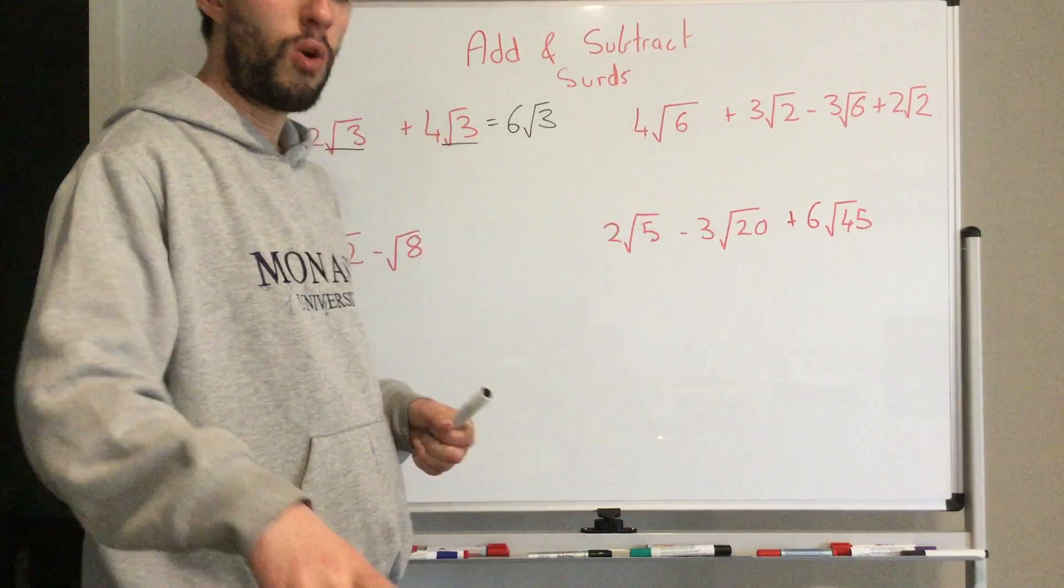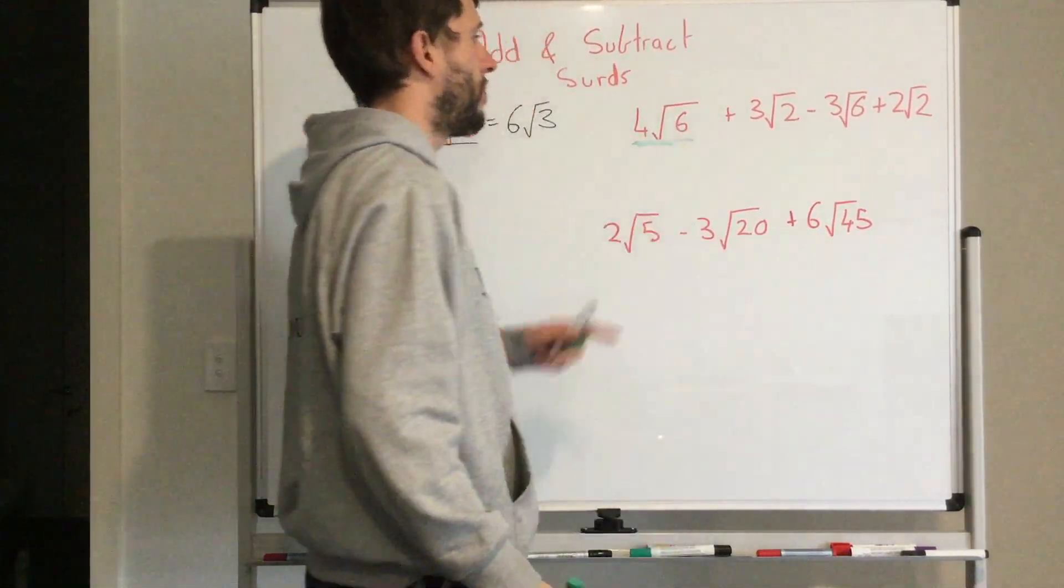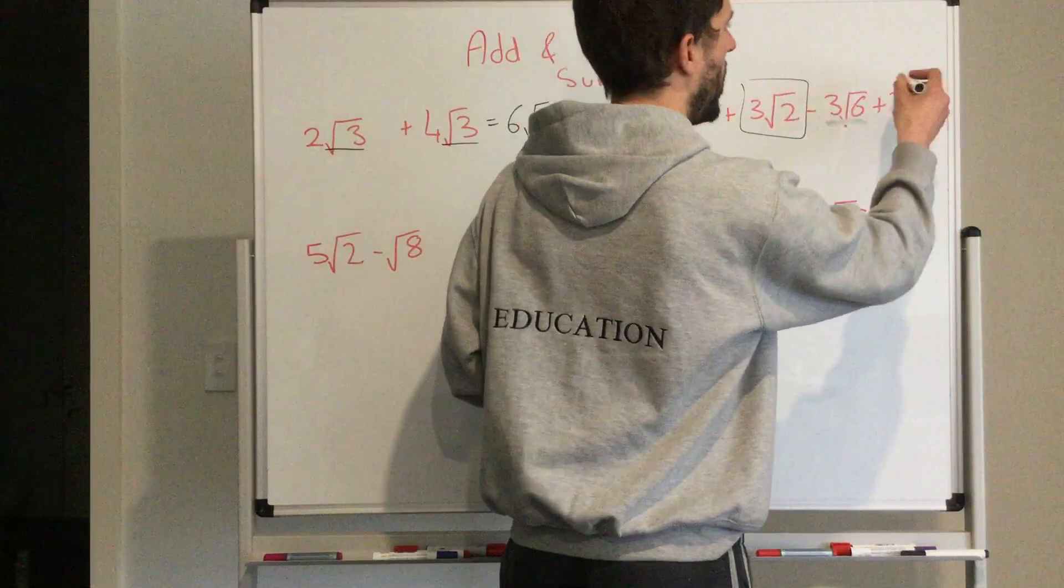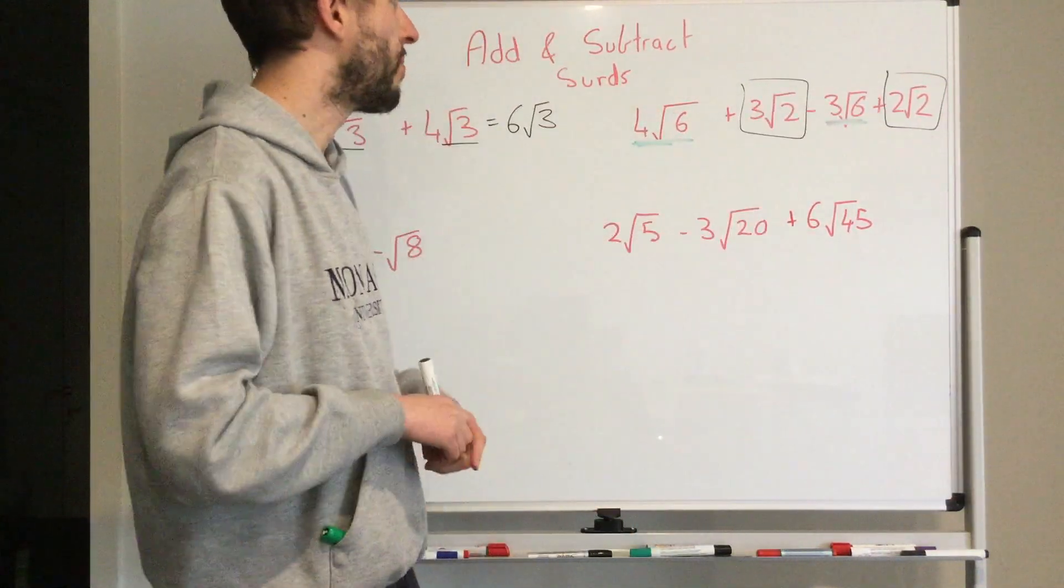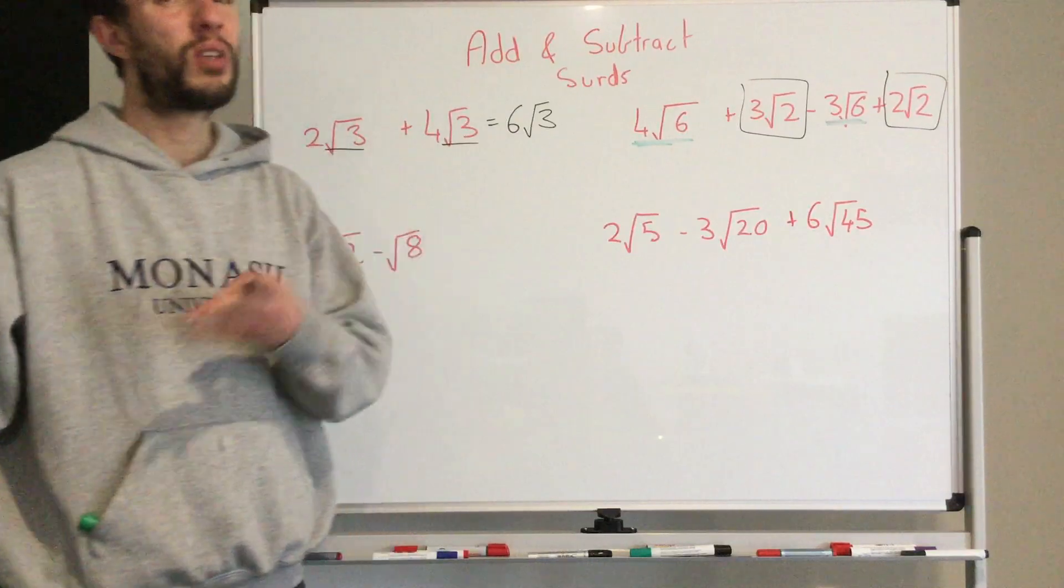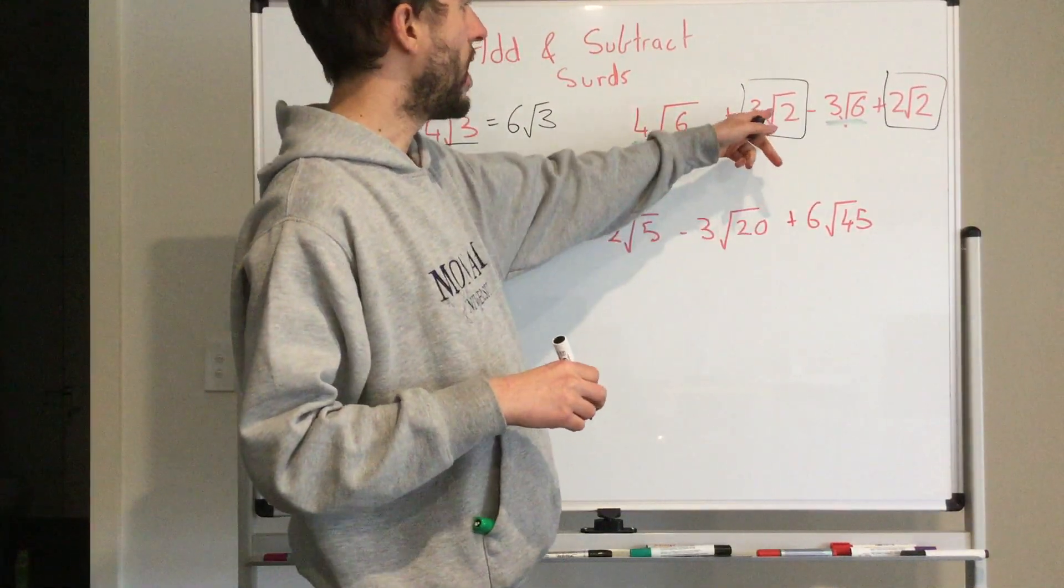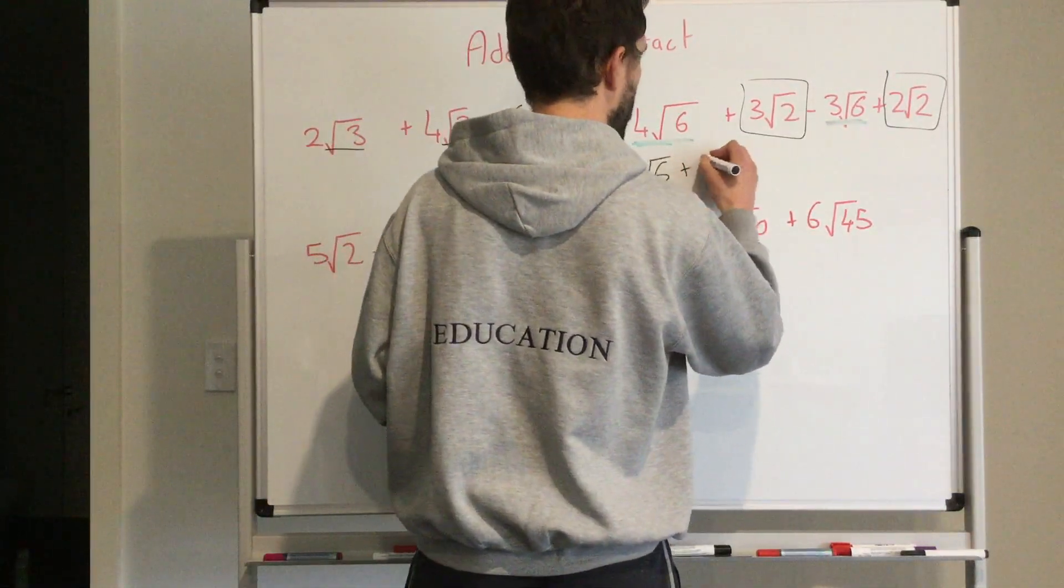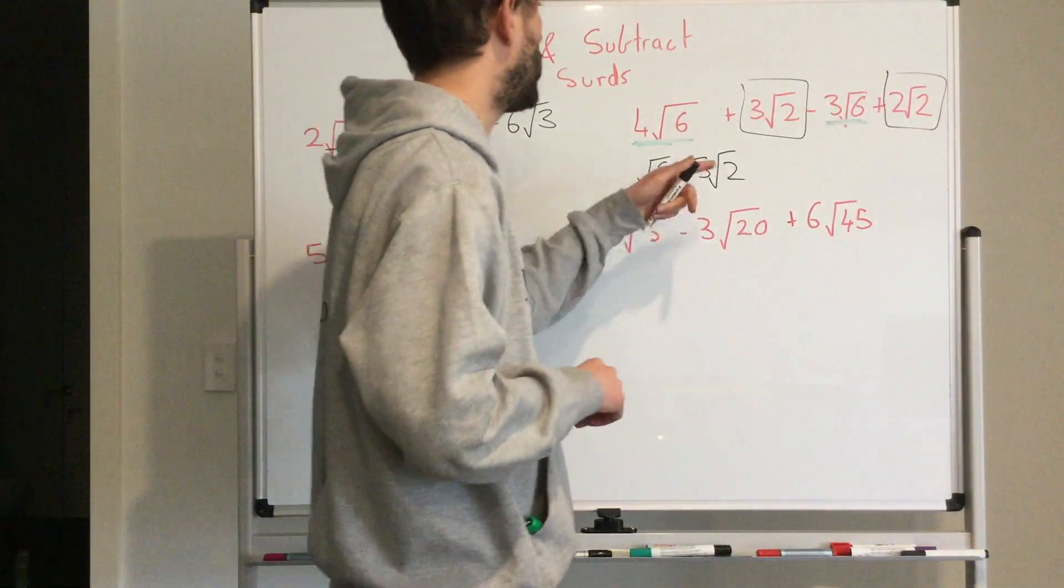Next thing, we are looking at what is the same, what is a like term. So let's have a look. I know here I've got root 6 and I've got root 6 here. Then I've got root 2 and root 2. So all I'm saying is I've got 4 lots of root 6 and I'm taking away 3 lots of root 6. I'll only have 1 lot of root 6 left. So I could write it as 1 root 6, but 1 times root 6 is just going to be root 6. Then I can look at my next part. I've got 3 lots of root 2 and I'm adding 2 more lots of root 2. 3 plus 2 equals 5. 5 root 2. And that, there you have it. We have just simplified our equation.